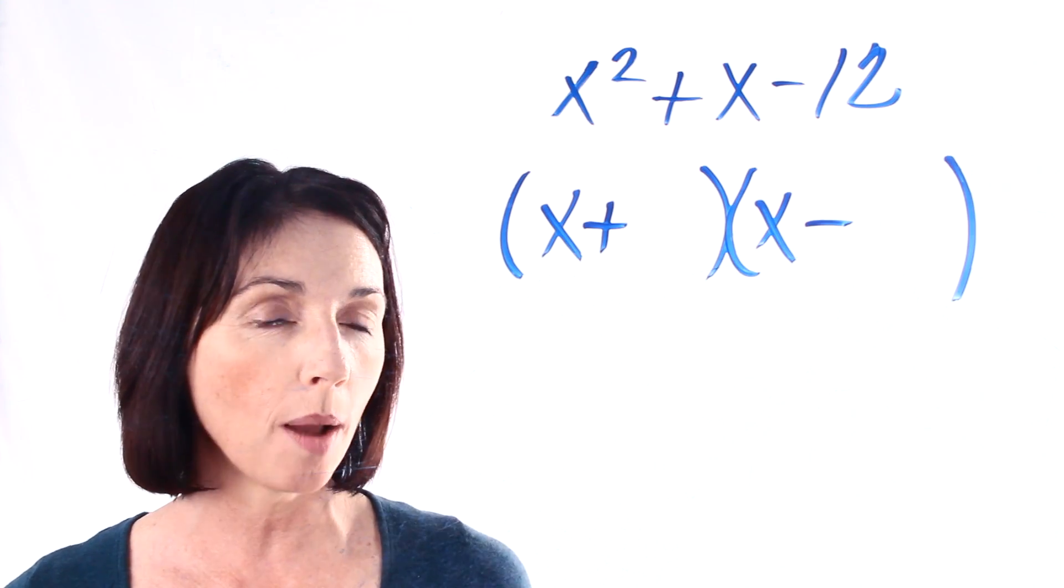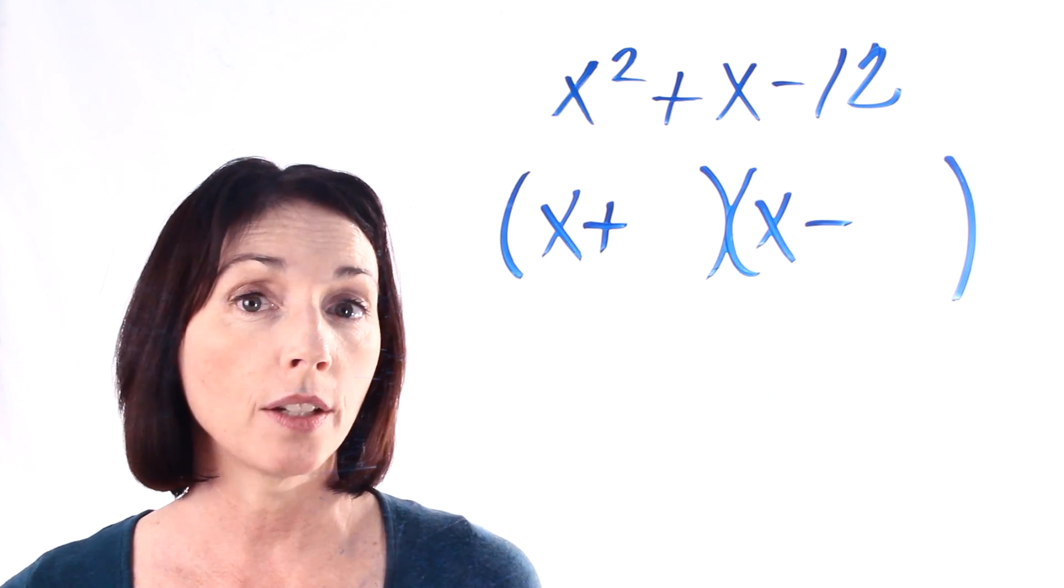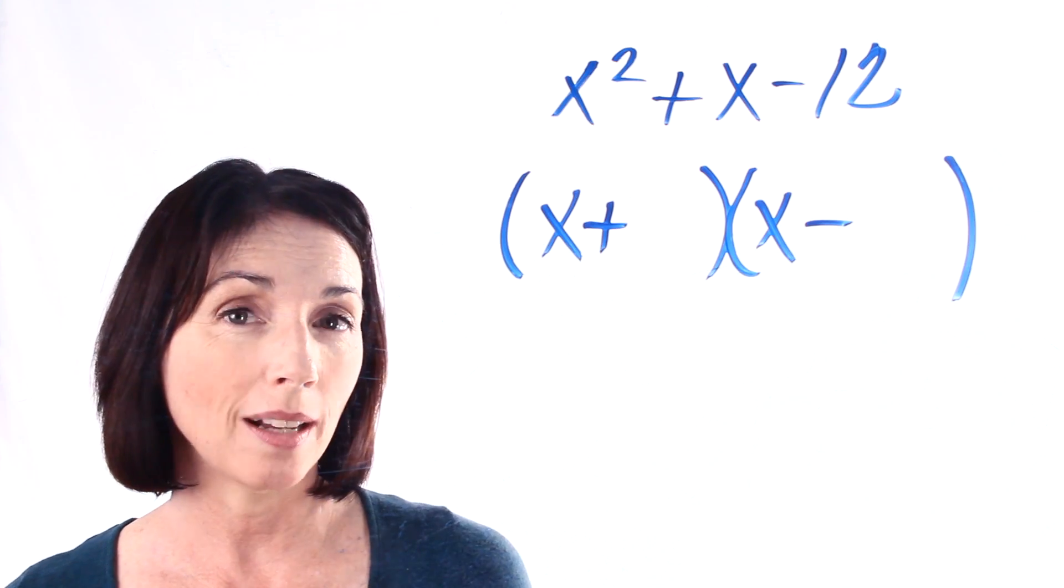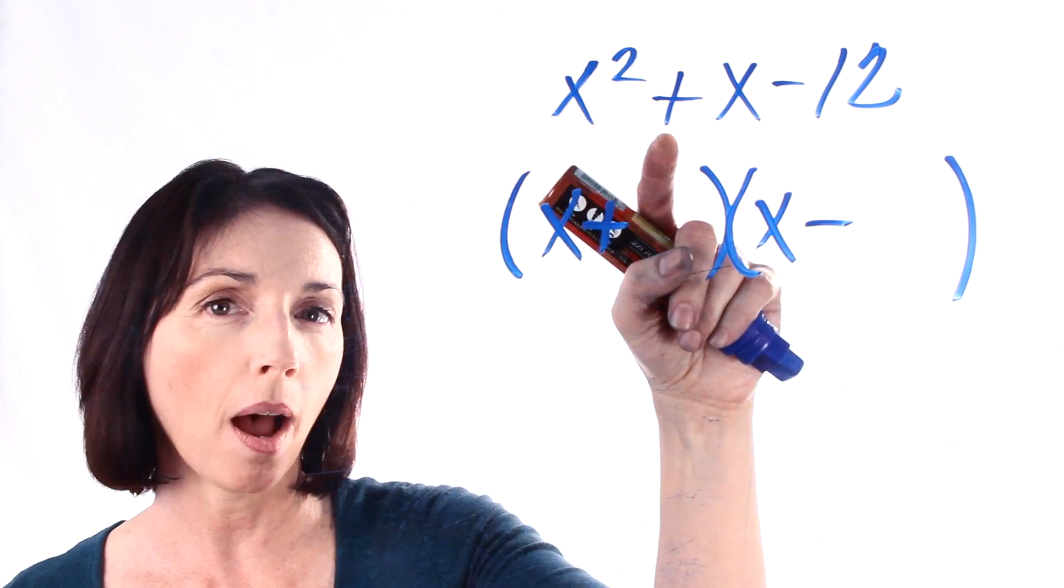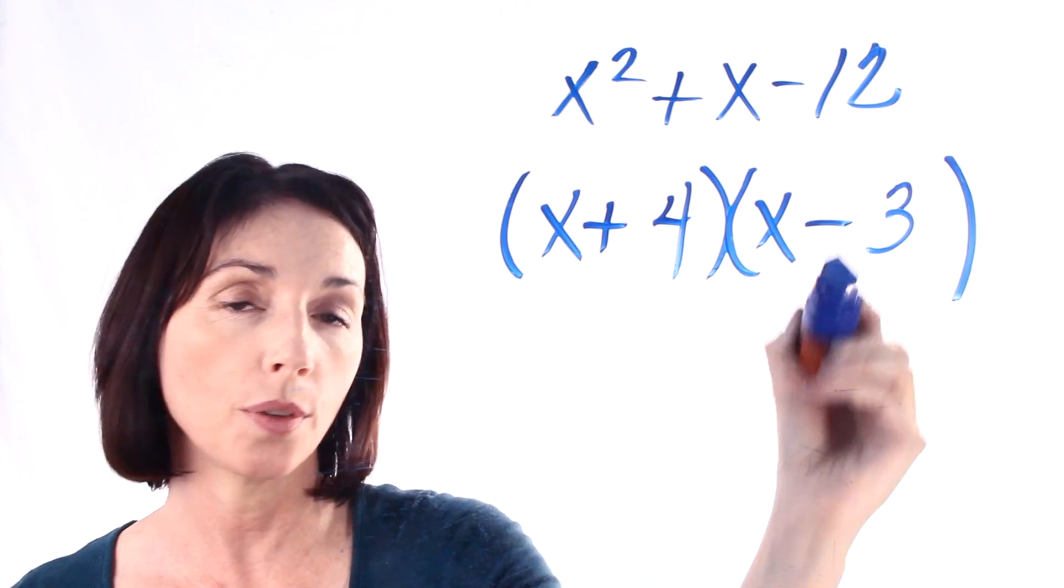Now 3 and 4 look pretty promising because they're only one apart. So if I were to add 3 to negative 4 I'd get a negative 1, but I want a positive 1. So let's do it the other way. Let's make it a positive 4 and a negative 3.